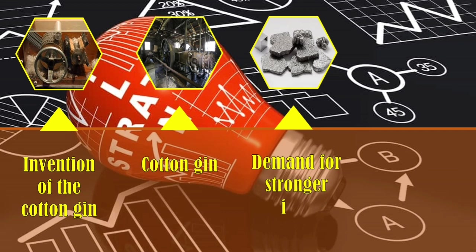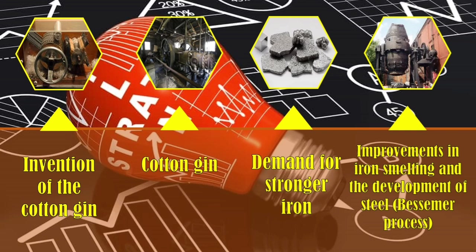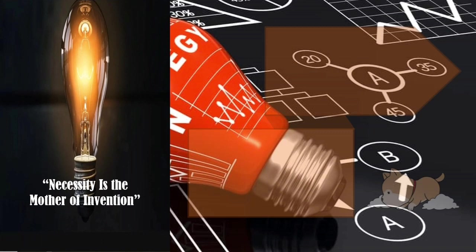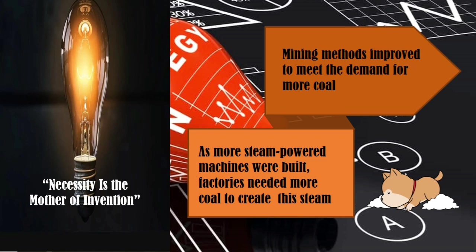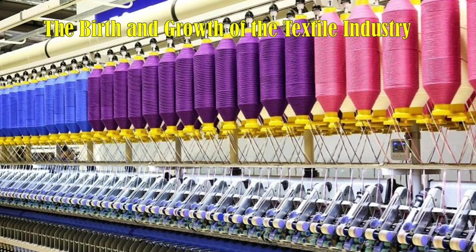Because of the invention of the cotton gin, it created demand for stronger iron and improvements in iron smelting, and the development of steel by the Bessemer process. As more steam-powered machines were built, factories needed more coal to create steam, resulting in mining methods that improved to meet the demand for more coal.